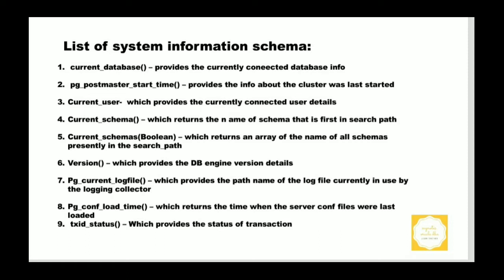The next one is current_schema, which returns the name of the schema that is first in the search path, or a null value if the search path is empty. This is the schema that will be used for any tables or other named objects that are created without specifying a target schema.